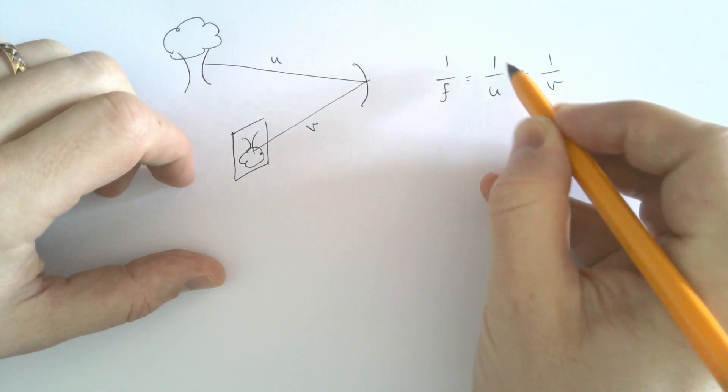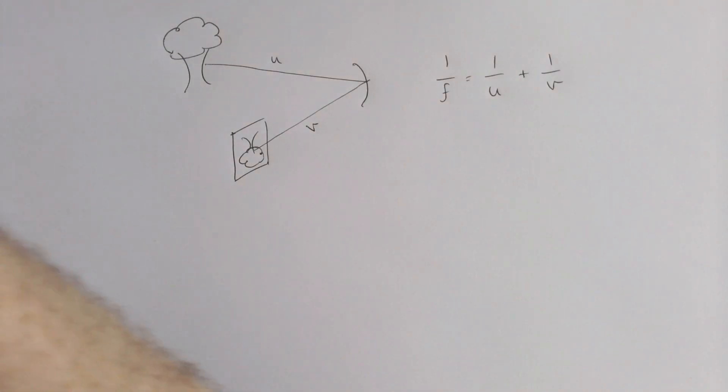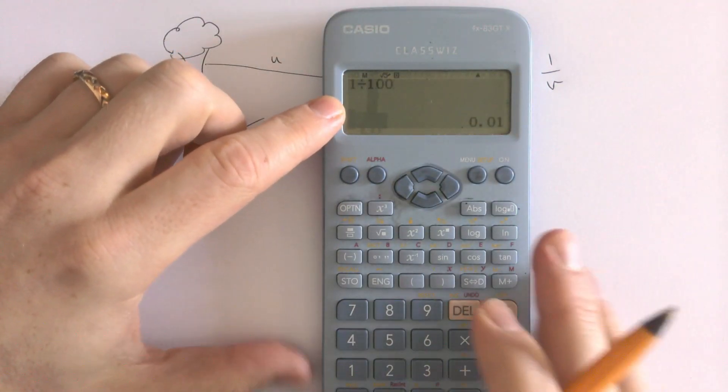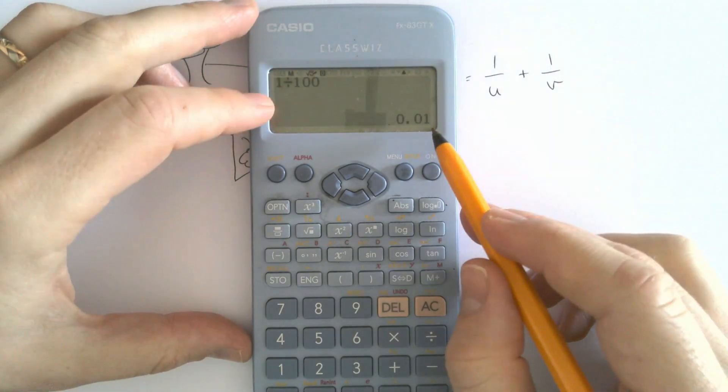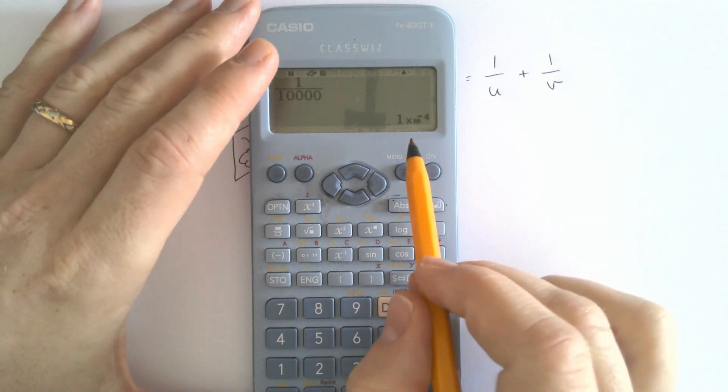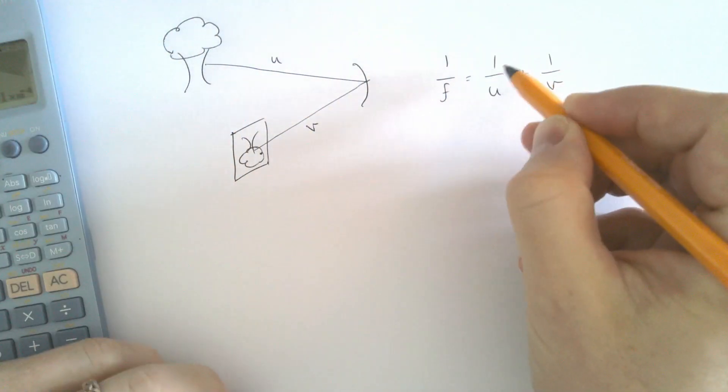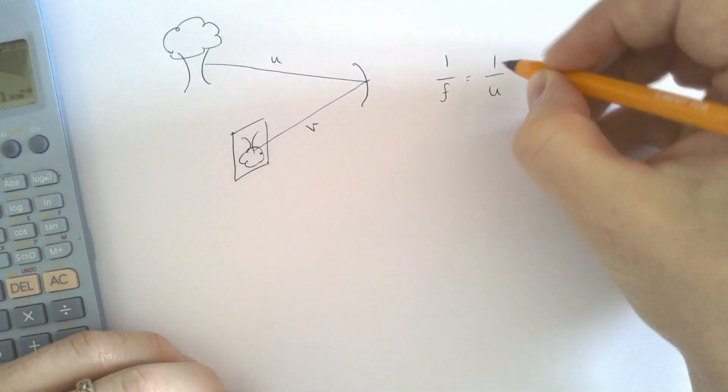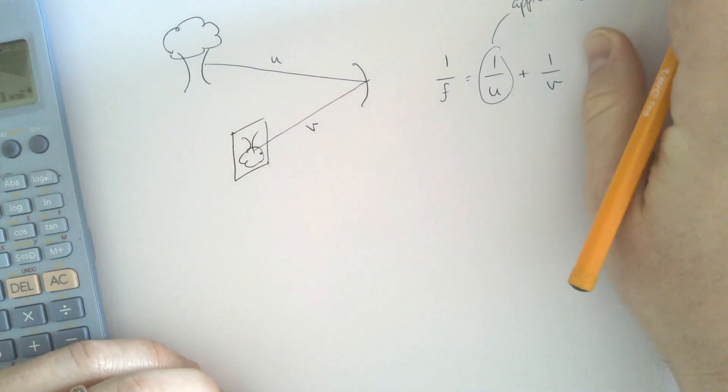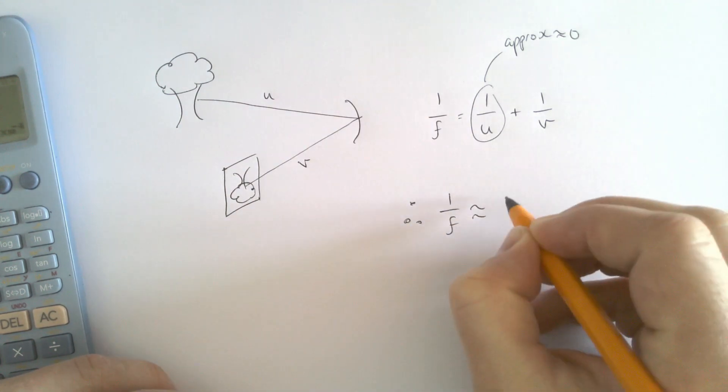So why is measuring the distance V going to give us an approximate focal length? Well, if we're using this equation, 1 over F equals 1 over U plus 1 over V, what we're saying here is that the object distance, 1 over U, is really big. If you grab your calculator and plug in a really big number underneath here, for example, if I say 1 divided by 100, it's 0.01. If I go even further away, we get an even tinier number, which is like 0.00001. So this number here ends up being basically negligible.